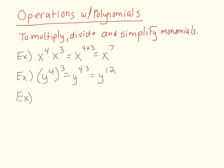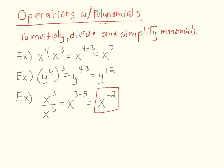Now, how about if we have a variable such as x to the 3rd over x to the 5th? Well, if we have it in fraction form, we can subtract the exponent values. So it's x raised to the 3 minus 5, and that becomes x raised to the negative 2. If we have a variable being raised to a negative number, all we do is find the reciprocal — or simply flip it over.